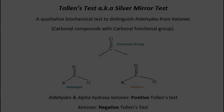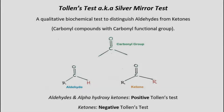The Tollens test, also known as the silver mirror test, is a qualitative biochemical test used to distinguish between aldehydes and ketones, which are collectively known as carbonyl compounds and contain the carbonyl functional group in their structure. Aldehydes give a positive Tollens test while ketones give a negative test.